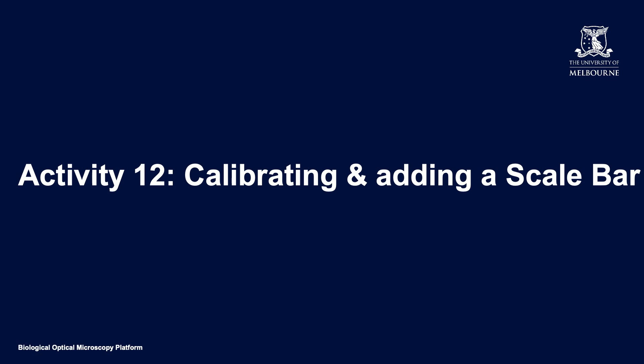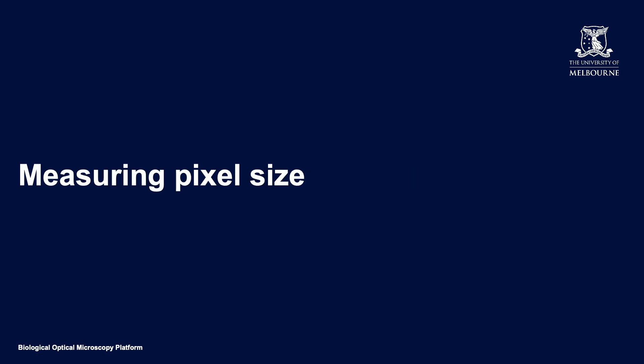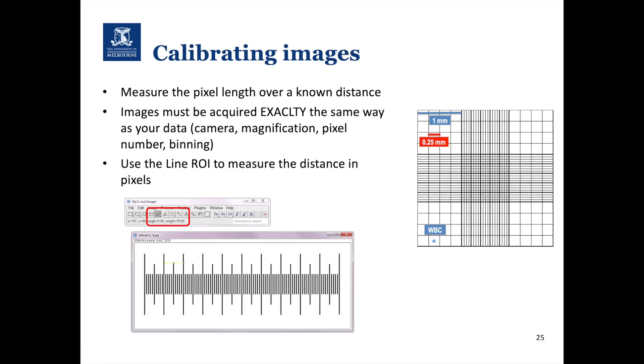What we're doing in this activity is adding some kind of distance information into an image that hasn't carried across that information from the microscope — so it's an uncalibrated image. One question we regularly get is: how do you know what the pixel size is to be able to calibrate that image? There are special slides available — which if you're at Melbourne University we can help you with — that allow you to measure distances on your microscope.